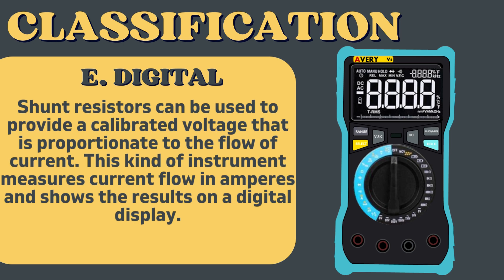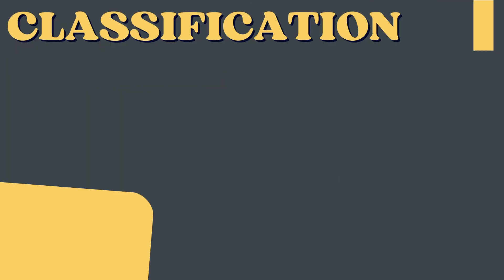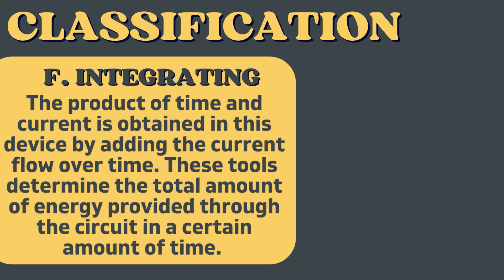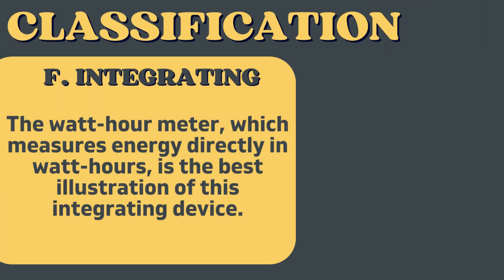The fifth classification is the digital ammeter, which uses shunt resistors to provide a calibrated voltage proportionate to the flow of current, displaying results on a digital display. The sixth type is the integrating ammeter, which obtains the product of time and current by adding current flow over time. The best illustration of this is the watt-hour meter, which measures energy directly in watt-hours.